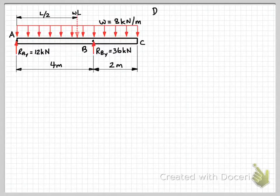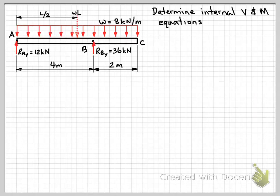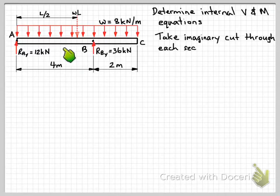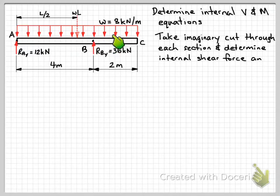Having now determined our reactions, we can go on and determine the internal shear and bending moment equations for the beam. To do that, we take an imaginary cut through each section of the beam and then determine our internal shear and bending moment as a function of the position in the beam.